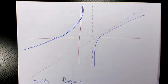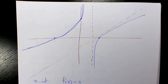So those are the two examples I had for oblique asymptotes. I hope you enjoyed this video — please leave a comment if you have any questions. Thank you for watching and have a great day.